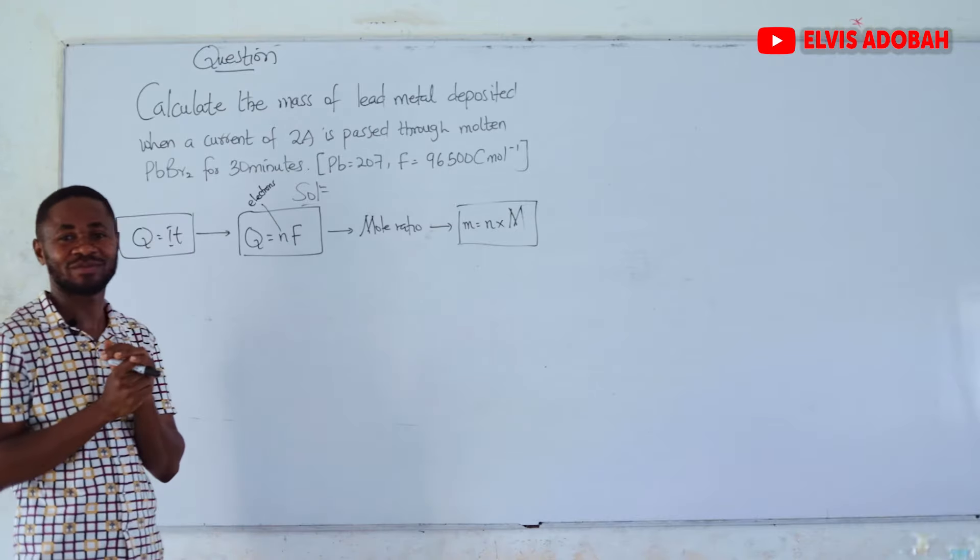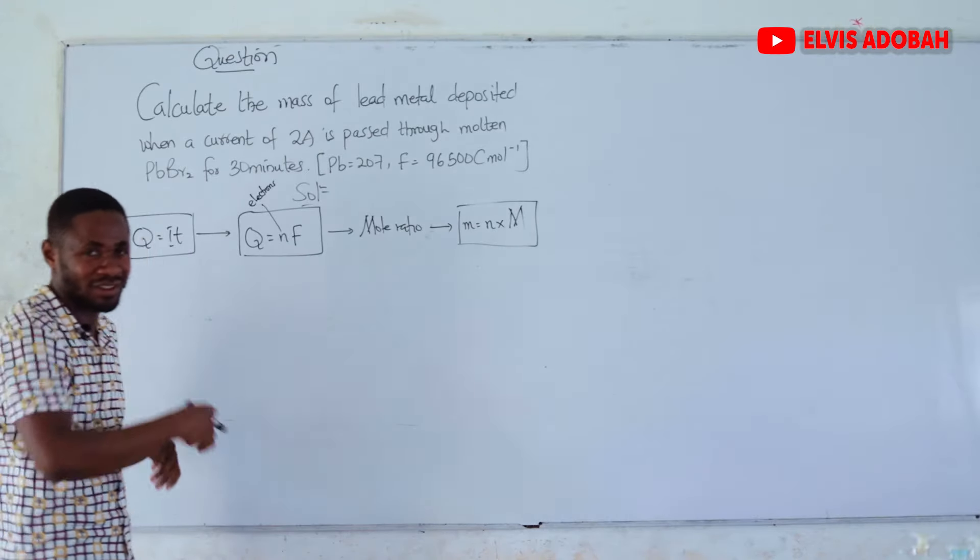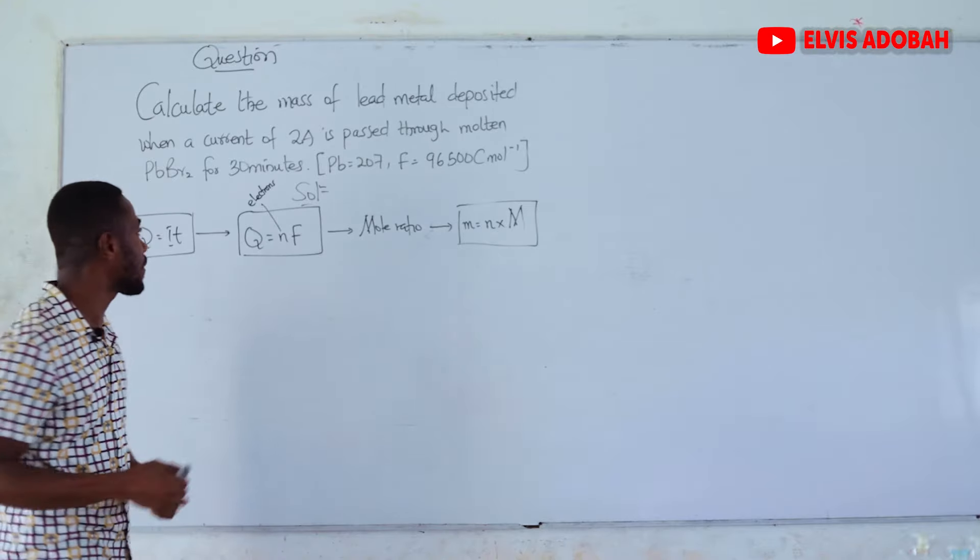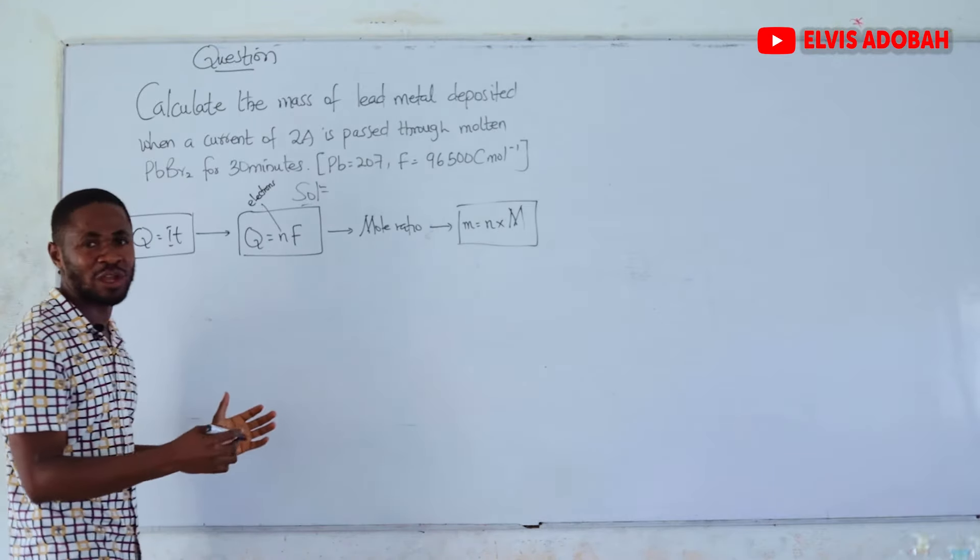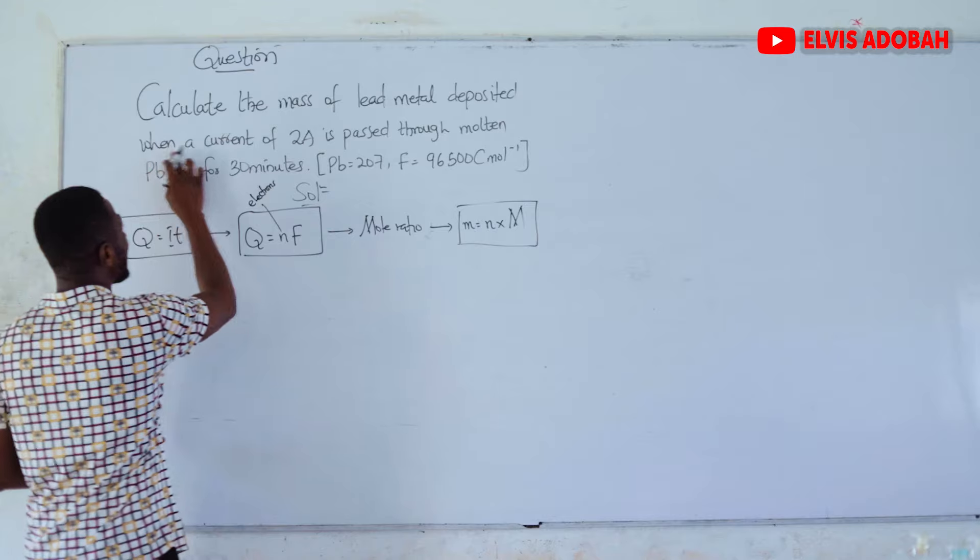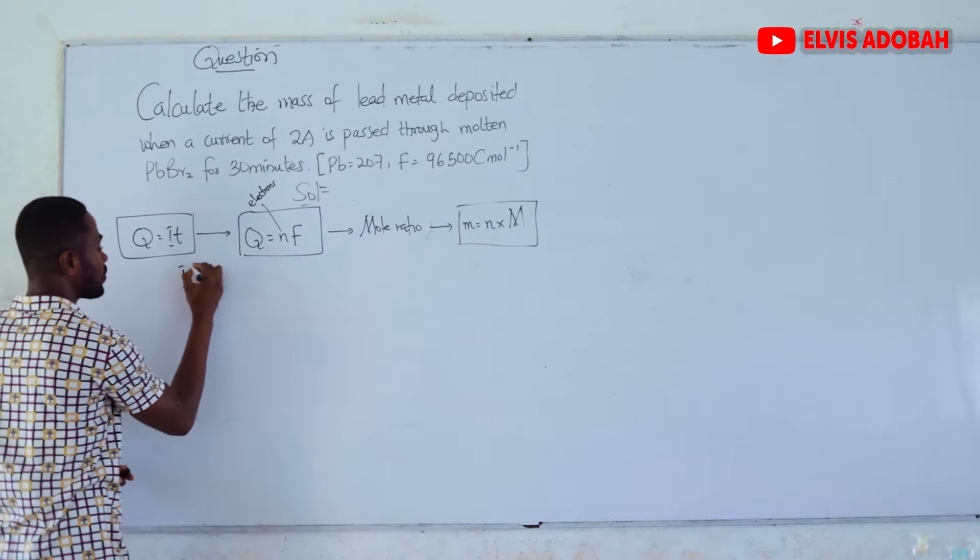Then we will do some small mole ratio. Then later on, we will use our formula mass is equal to amount in moles times molar mass. Follow me.